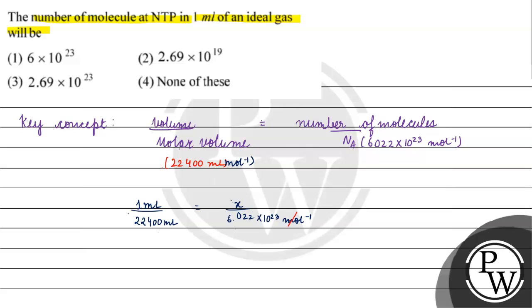we have mol inverse here, we have to cancel it. X's value will be 6.022 into 10 to the power 23 divided by 22,400, so we will solve this.